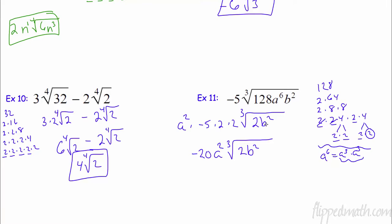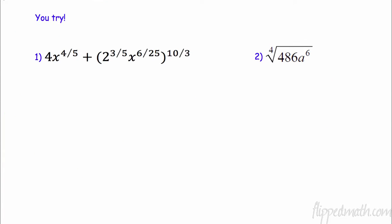For b squared: I need at least three of the same thing to take out, and there aren't three, so b squared stays inside. So the final answer is negative 20a squared times the cube root of 2b squared. Pause the video and try the next set.